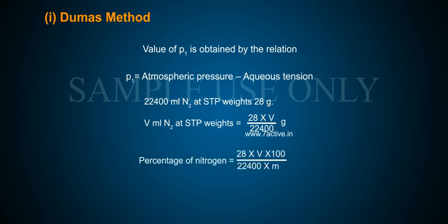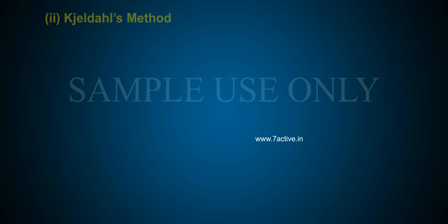Percentage of nitrogen is obtained by the following: 22,400 mL at STP weighs 28 g. V mL nitrogen at STP weighs 28 × V / 22,400 grams.